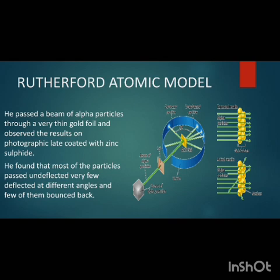Let's first study Rutherford's atomic model. Rutherford performed an experiment in which he took a gold foil and alpha particles. The alpha particles came from a radioactive source through a slit. There was a photographic plate — a screen with a zinc sulfide coating — surrounding the setup to detect results.